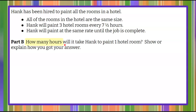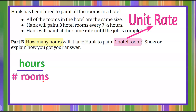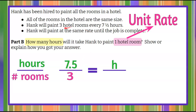We're going to determine how many hours it takes Hank to paint one hotel room. When we talk about a rate to do one, that is a unit rate — how much for one. Our rate is hours to the number of rooms Hank is painting. We set up our proportion, bringing forward seven and a half to three, with h as our unknown numerator and one hotel room as our denominator.